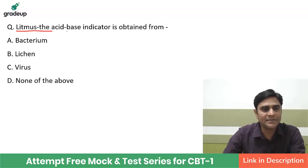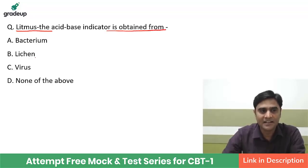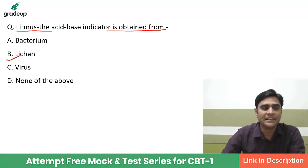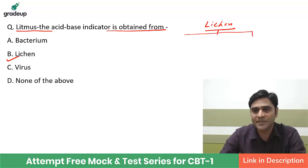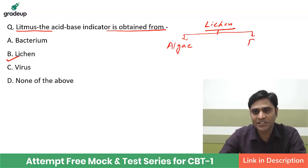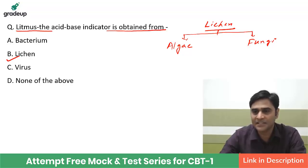Next question: Litmus, which is the acid-base indicator, is obtained from bacteria, lichen, viruses, or none of these? Your answer is lichen. What is lichen? It is the symbiotic association between algae and fungi. Lichen means algae plus fungi, and the relation of algae and fungi in lichen is called symbiosis.